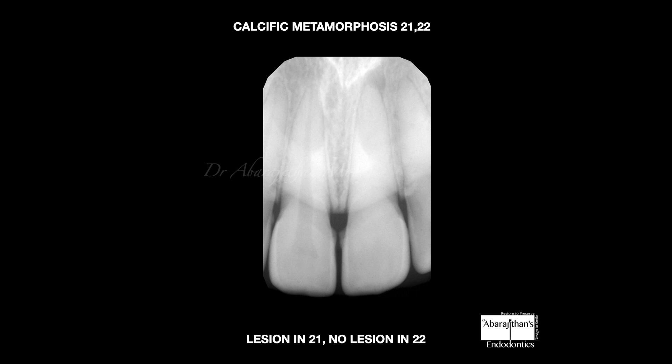This patient also had trauma and reported with two calcified teeth in adjacent teeth. She had symptoms only in the maxillary central incisor, whereas the maxillary lateral incisor was clinically asymptomatic. On radiograph, I could clearly see a lesion associated with the maxillary central incisor, whereas the periapical region of the lateral incisor was healthy with an intact lamina dura. As I mentioned, if there is a lesion, there has to be a canal.